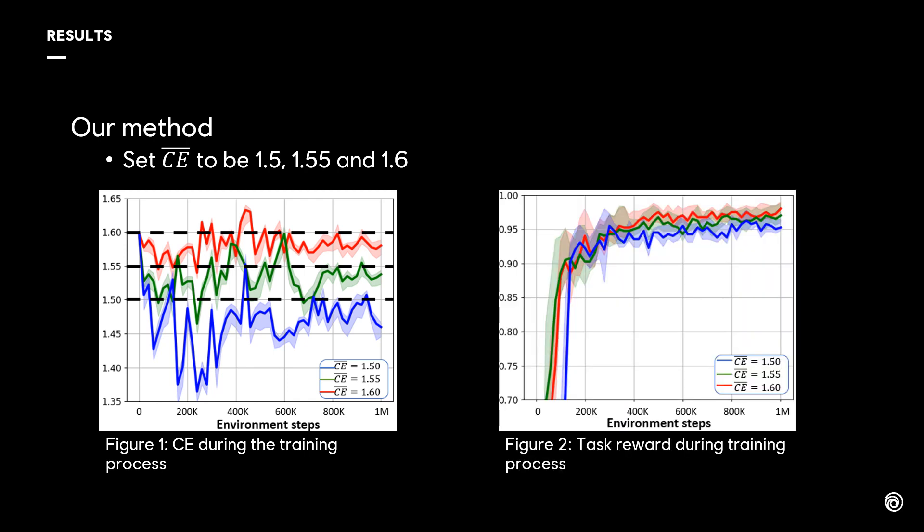Figure 2 shows the task reward during the training process under different constraints. We can see that our algorithm can find a policy to complete the main task under each constraint.